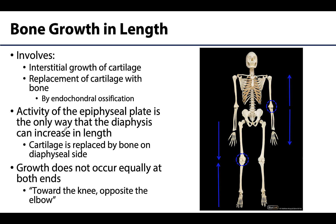Growth in length occurs through two processes. First, you will have interstitial growth of the cartilage found in the epiphyseal plates — remember, that is hyaline cartilage. It also involves the replacement of that cartilage with bone. As we know from a previous video, this occurs via endochondral ossification. It is the activity of the epiphyseal plate that allows the diaphysis to get longer. The hyaline cartilage gets larger at the epiphyseal plate and is replaced by bone on the diaphyseal side, as new chondrocytes replace the old and are eventually replaced by bony tissue.